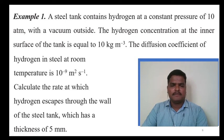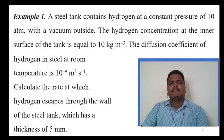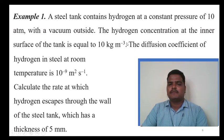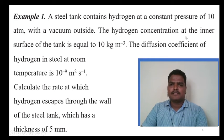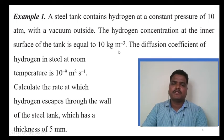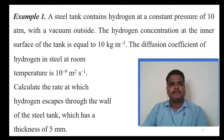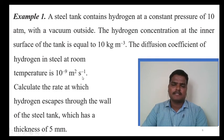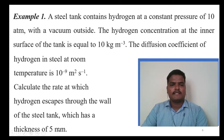First, when a problem is given, we have to figure out what is given. The constant pressure of hydrogen is given, and there is vacuum outside the steel tank. The hydrogen concentration at the inner surface is 10 kg per meter cube, and outside the tank the concentration is zero. So the concentration difference is 10 kg per meter cube. The diffusion coefficient d is 10^-9 meter squared per second. We have to calculate J, and x is also given—the distance through which diffusion is occurring. x is 5 millimeters.